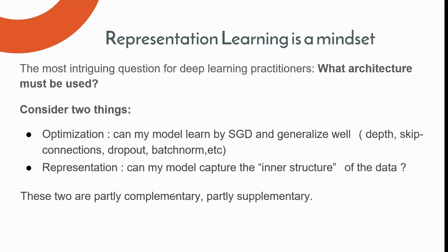To learn a good representation, you need to consider two things: optimization strategy and generalization. You need to design an efficient and effective neural network based on depth, skip connections, dropout, batch normalization, and layer normalization. Batch norm typically works better in convolutional networks, layer norm works better in recurrent networks, and MLP with layer norm also works better in recurrent networks. For representation, you need to determine which vector in the model should be selected as the representation and which loss objective should be used.